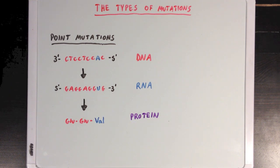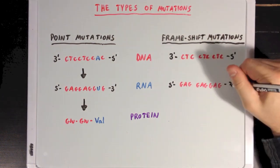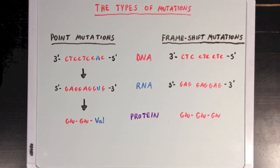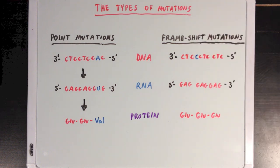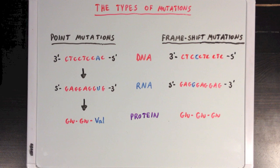Another type of mutation is called frameshift, which works a little differently. I'll write out the same DNA, RNA, and protein sequences from before, but now, instead of changing one base to another, I'm going to add one to the sequence. Here, I've thrown in this extra cytosine base that I've written in blue. This change would lead to an additional guanine base being in the resulting messenger RNA sequence, and this mutation will change the reading frame of the RNA.